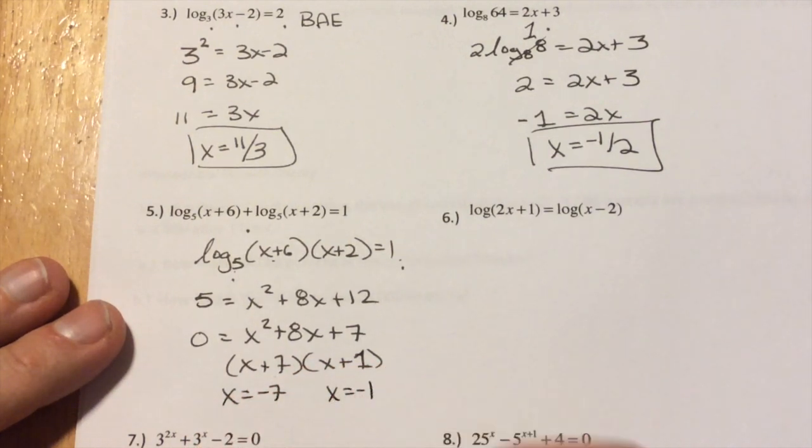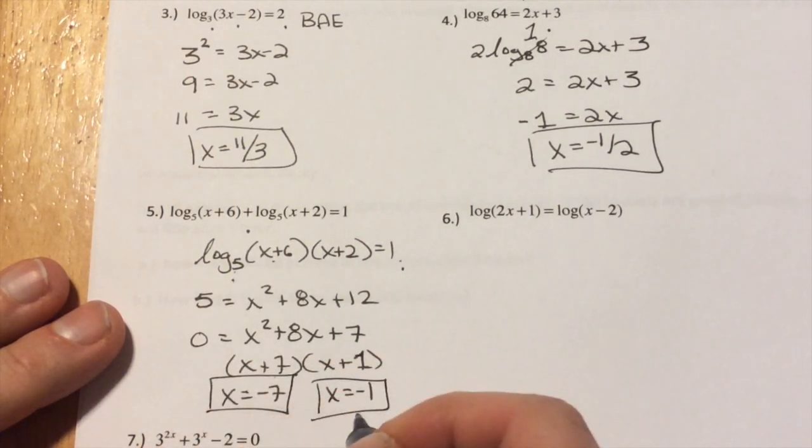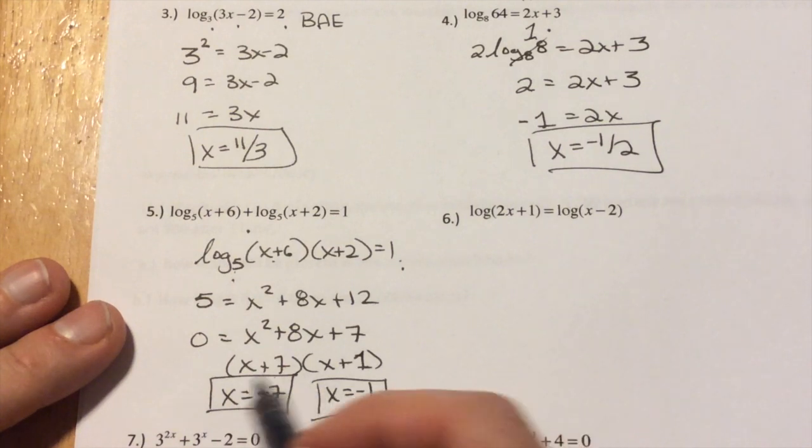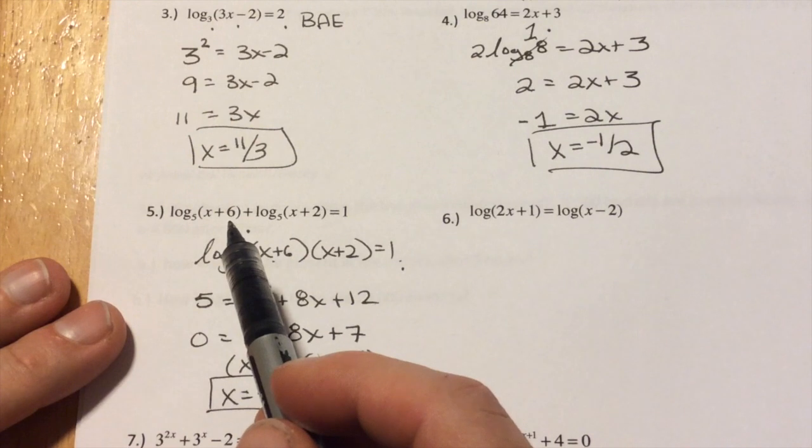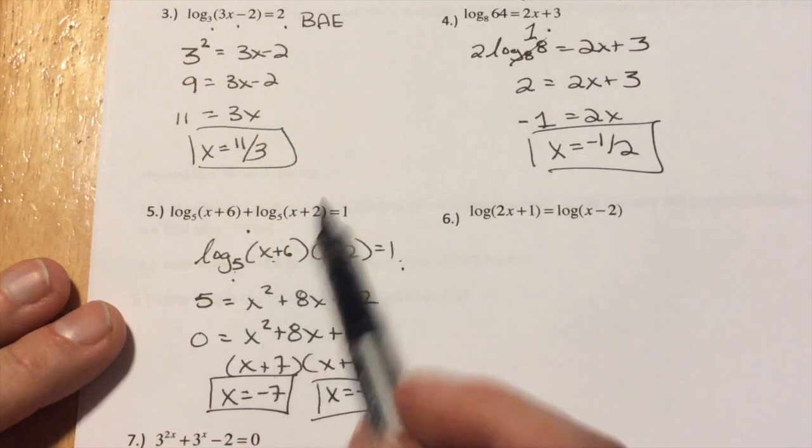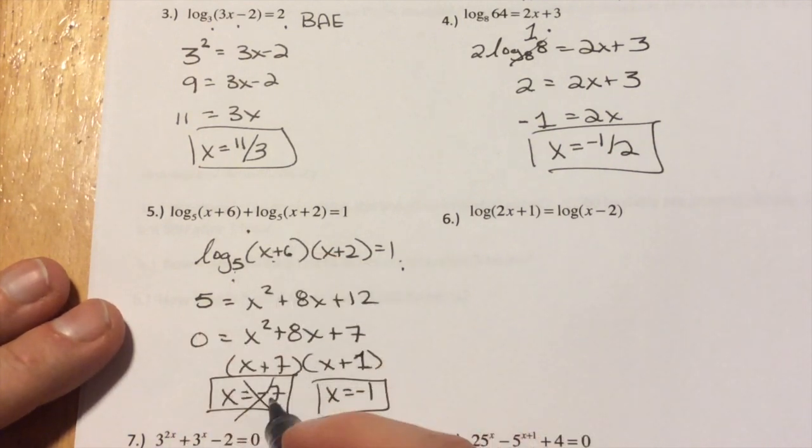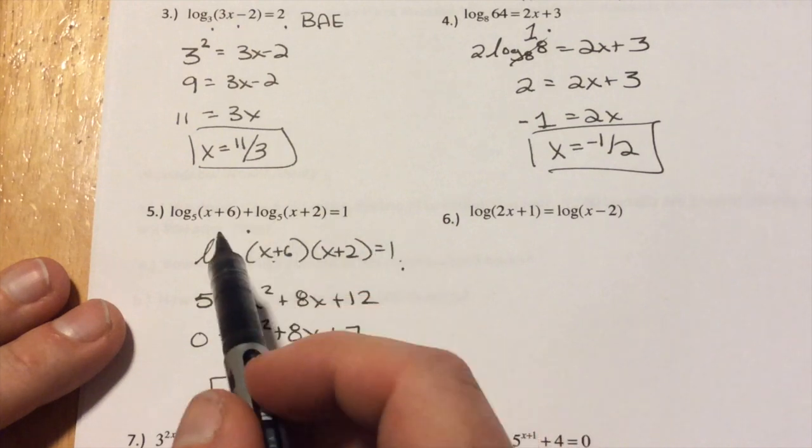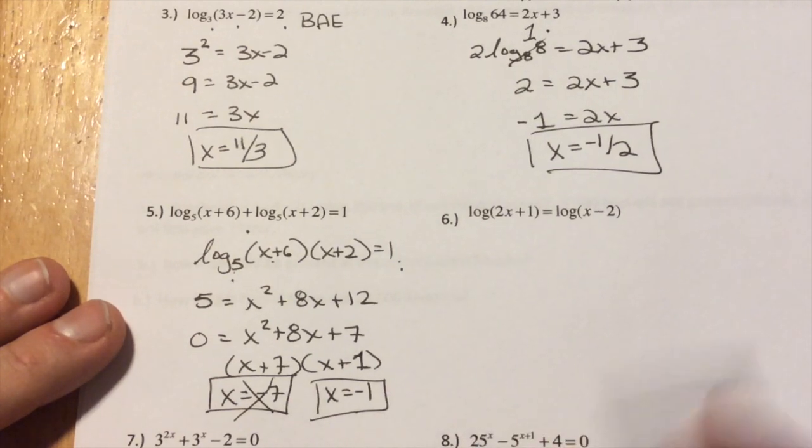And now, subtract, because we now have a quadratic and we can solve that pretty simply. Subtract 5, you get 0 equals x squared plus 8x plus 7. Factor x and x. This is plus 7 plus 1, 7 plus 1 is 8, 7 times 1 is 7. So x equals negative 7, x equals negative 1. These should be our two answers, but what do we have to check with logs? Can I have a negative value inside a log? So I see, does negative 7 work? What's negative 7 plus 6? Well that's negative 1. And negative 7 plus 2? That's also a negative. We can't have a negative inside a log, so negative 7 doesn't work. How about negative 1? Negative 1 plus 6? That's positive. Negative 1 plus 2? That's also positive. So x equals negative 1 does work. So that's our answer.